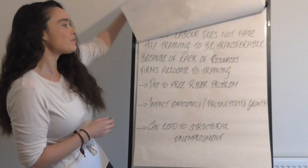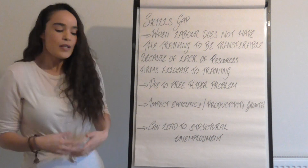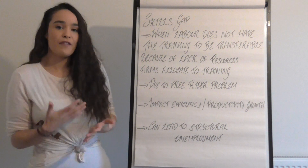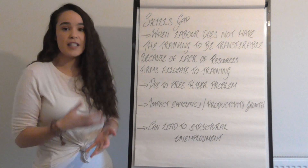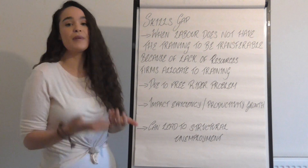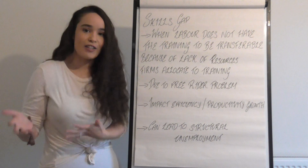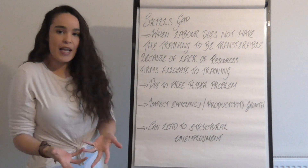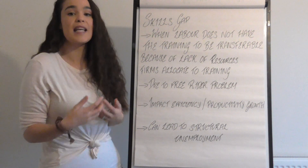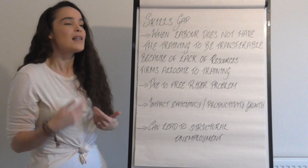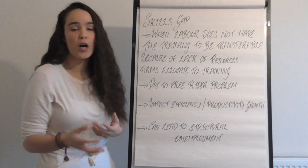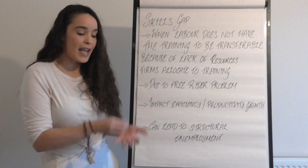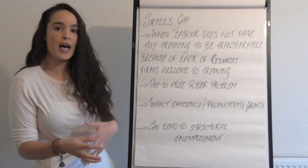The first thing we're going to look at is a skills gap. We would like to live in a world where our labour is transferable — remember that labour is a factor of production. Ideally, factors of production are completely transferable, as in the LRAS classical model. But that doesn't always happen because there is a skills gap, meaning labour doesn't have the training to transfer from one job to another when we need it in a certain area of the economy.